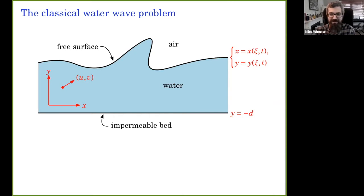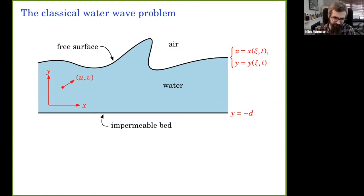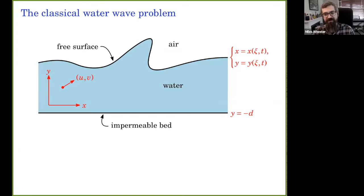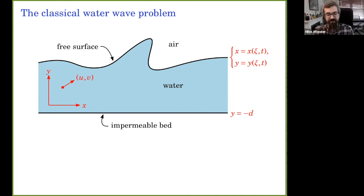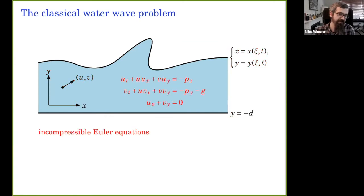I need notation for the two boundary components. The bed is y equals minus d, where d is some reference depth. For the surface, because I want to explicitly allow for waves where the surface isn't a graph, I use a parametric representation: c is the parameter that moves along the surface, and of course the whole surface also moves in time, so everything depends on t.